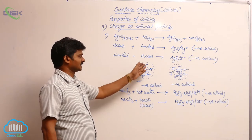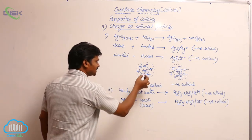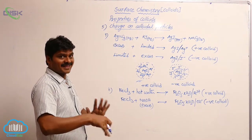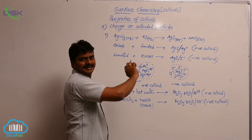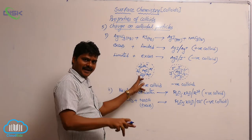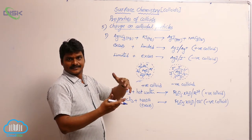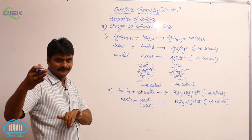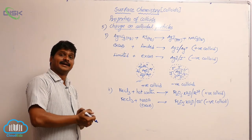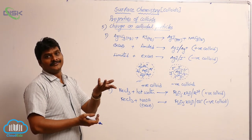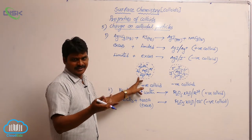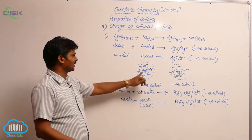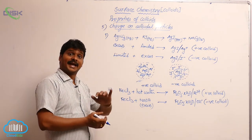So we have discussed the fixed layer. This fixed layer of charges attracts opposite ions from the medium, forming another layer called the movable or diffused layer. The fixed layer is rigid and doesn't move, while the mobile/diffused layer is diffusible. This existence of two layers — positive and negative — around the colloidal particles is called the electrical double layer.